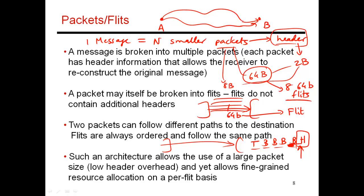The body flit just follows the head flit — whatever direction the head flit is sent, the body flit must follow in the same direction. To prevent confusion, while a packet is going over a link, a different packet can't cut in. Otherwise, you'd get confused about which flit belongs to which packet. When the head flit goes through a router, the flits behind it are assumed to be body flits until you see a tail flit, which signals the last flit of that packet. The next thing seen will likely be a new head flit for a new packet.